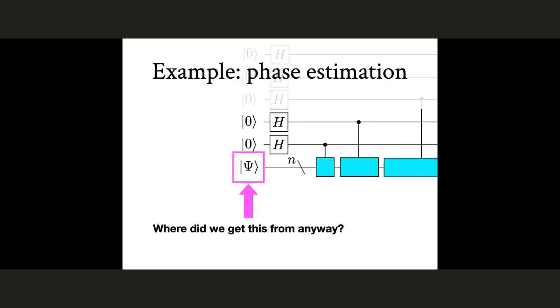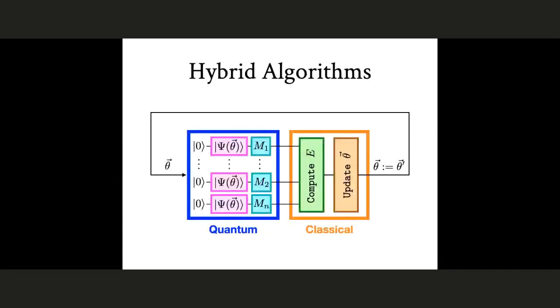And since we know that the coherence time is finite, these kinds of algorithms are not practical for NISC devices. And a thing that I didn't mention is that I also have to prepare this state in the first place. So the cost of getting to psi should be included in my runtime as well. So for these reasons, people don't usually consider algorithms like this for NISC machines. And instead, we think about hybrid algorithms.